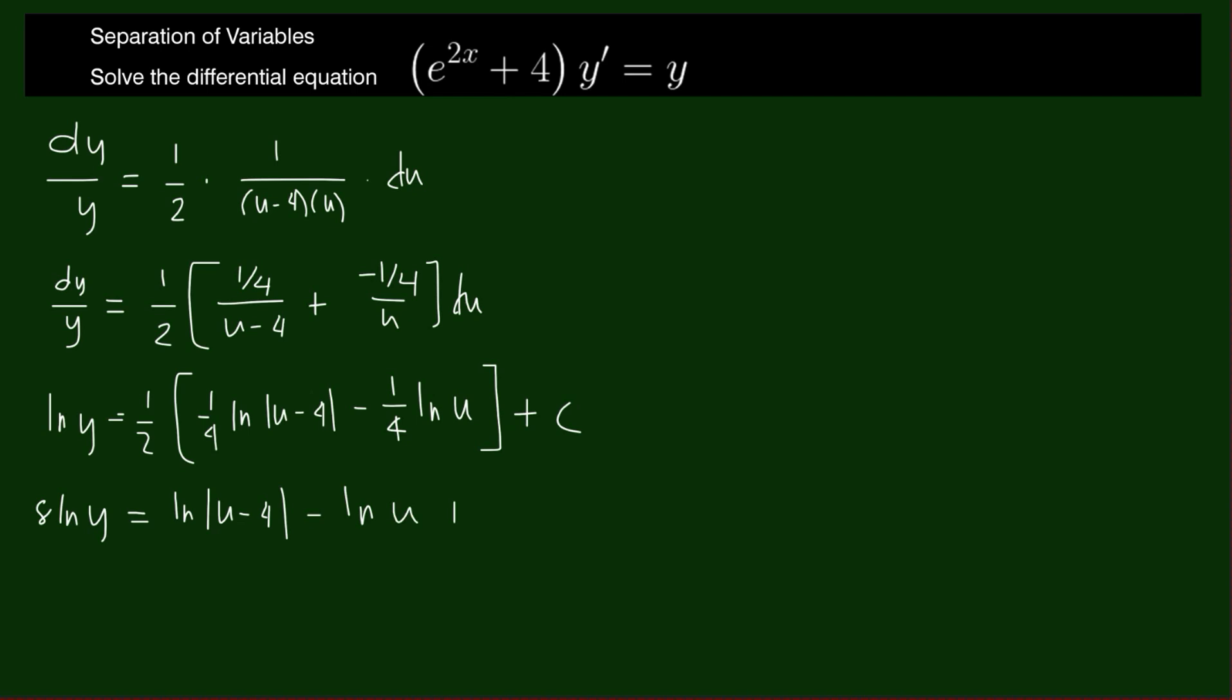If we multiply the whole equation by 8, we get 8 ln of y equals ln of u minus 4 minus ln of u. Let's write c as ln of c.